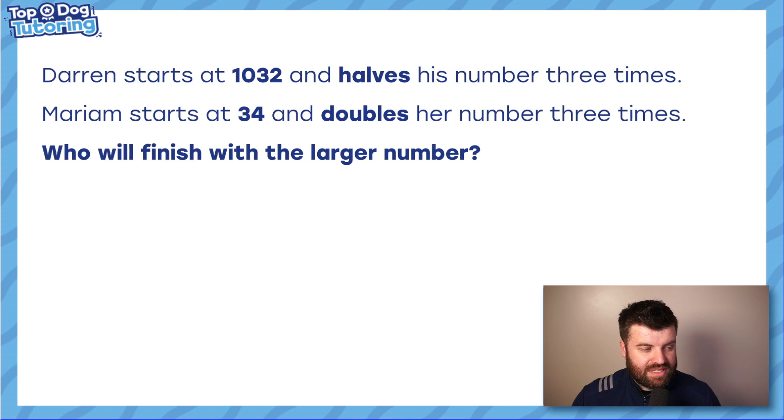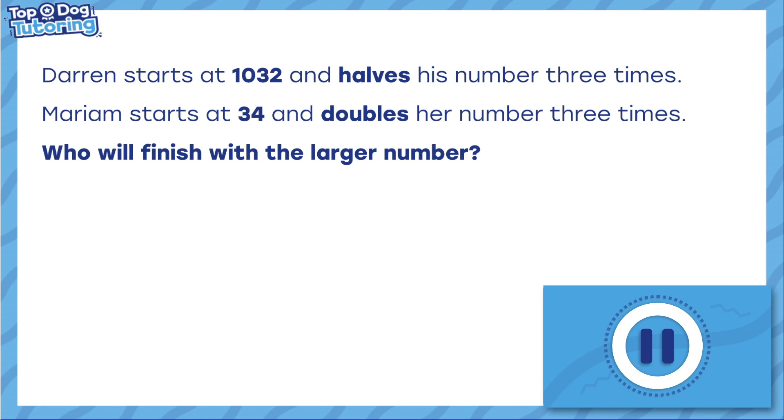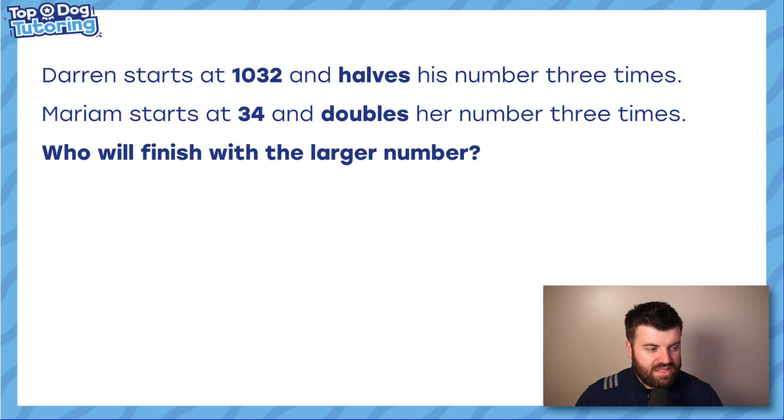So here is a bit of a word problem for us to have a look at. Darren starts at 1032 and halves his number three times. Mariam starts at 34 and doubles her number three times. Who will finish with the larger number? There are a lot of steps to do here, guys. Find out what Darren ends on. Find out what Mariam ends on. And tell me who ends up with the larger number. Have a go. We'll go through it after. Okay. Let's start with Darren. 1032. So we're going to start with that number. We're going to half it three times. Here's the first time. Half of 1,000 is 500. Half of 32 is 16.